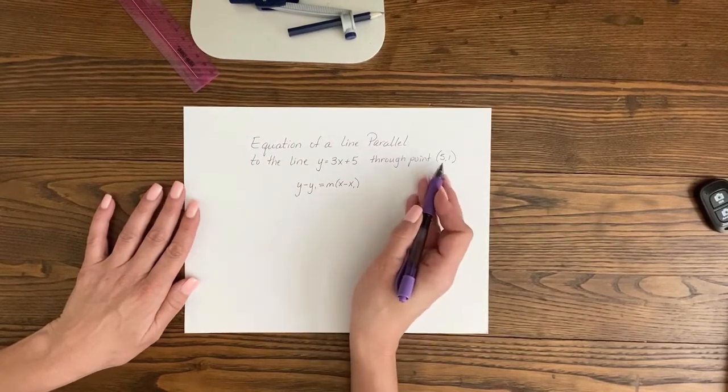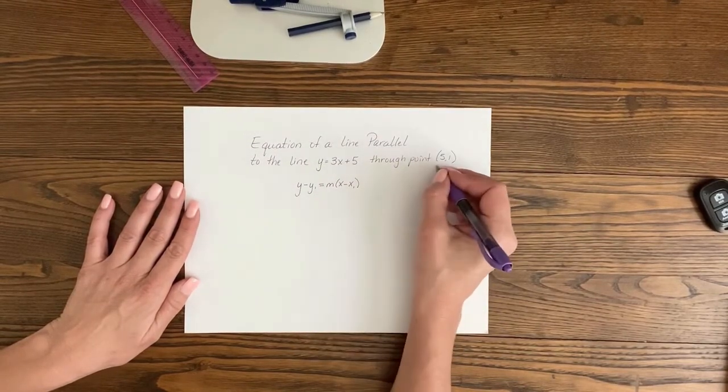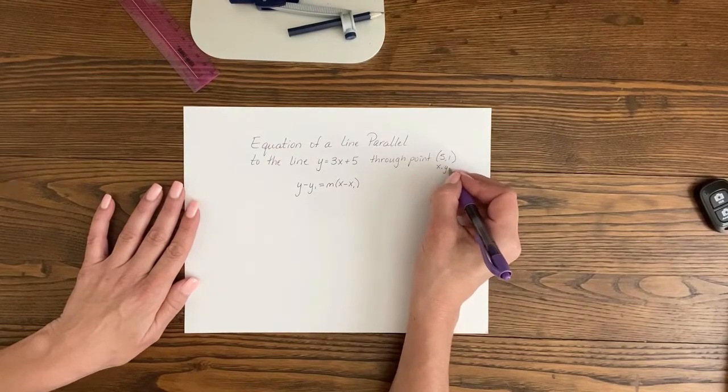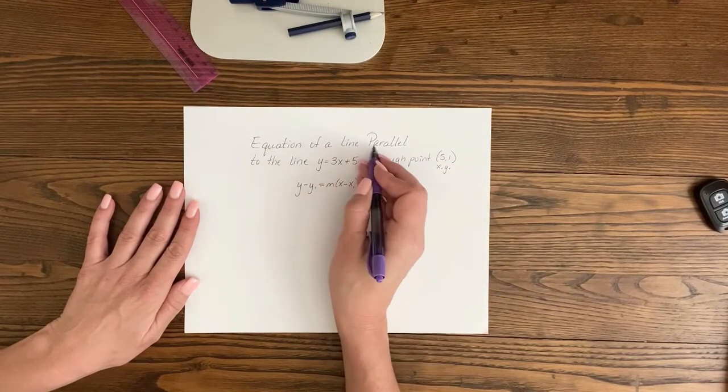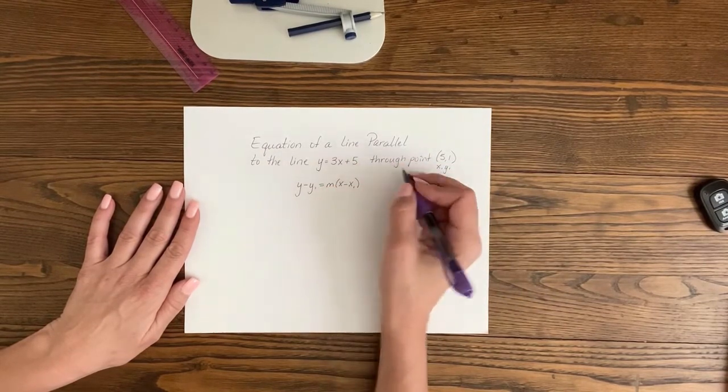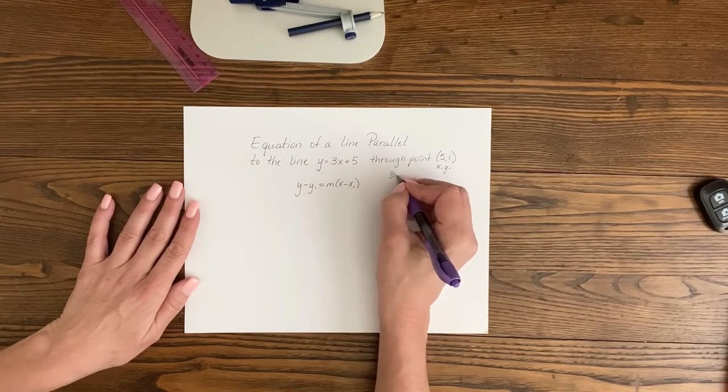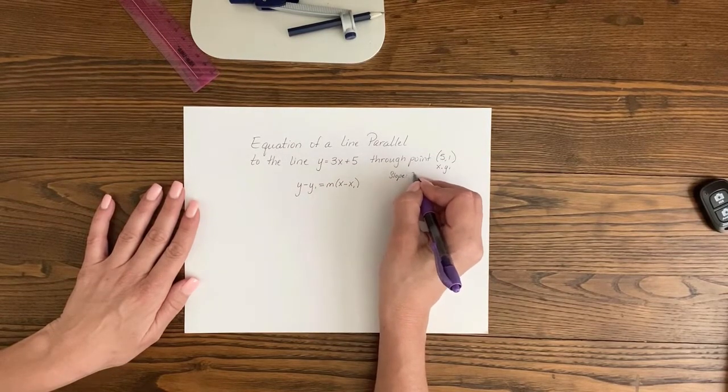We are going to use the point that they gave us as x1, y1. And the slope parallel is going to be the same slope, so we are going to use slope 3.